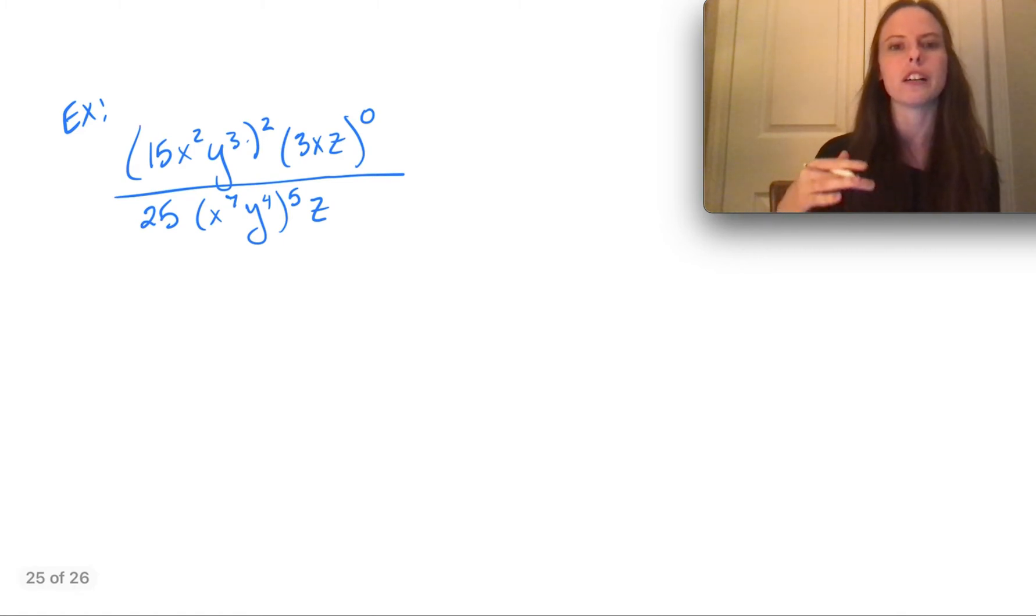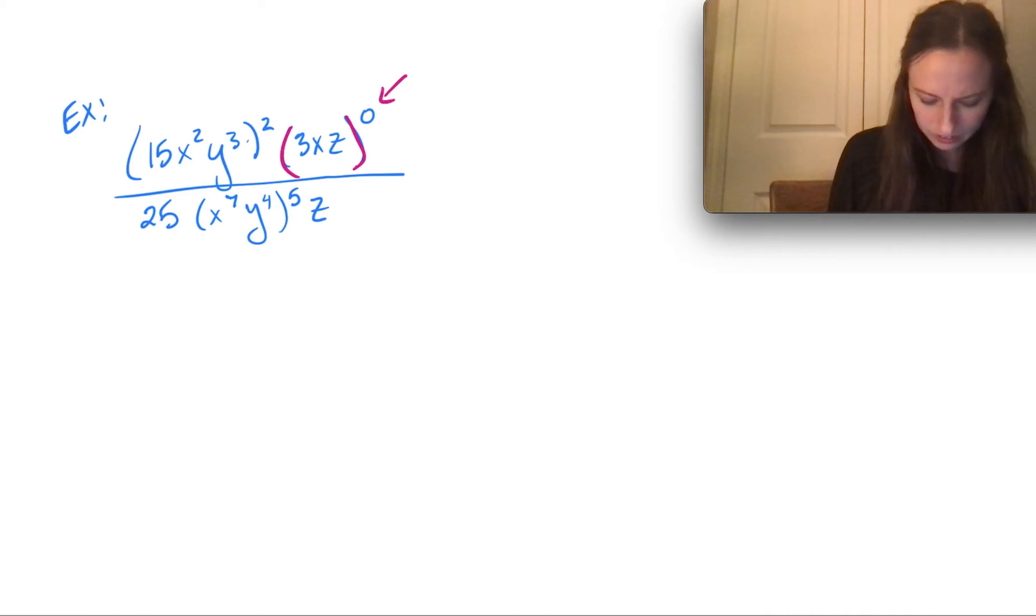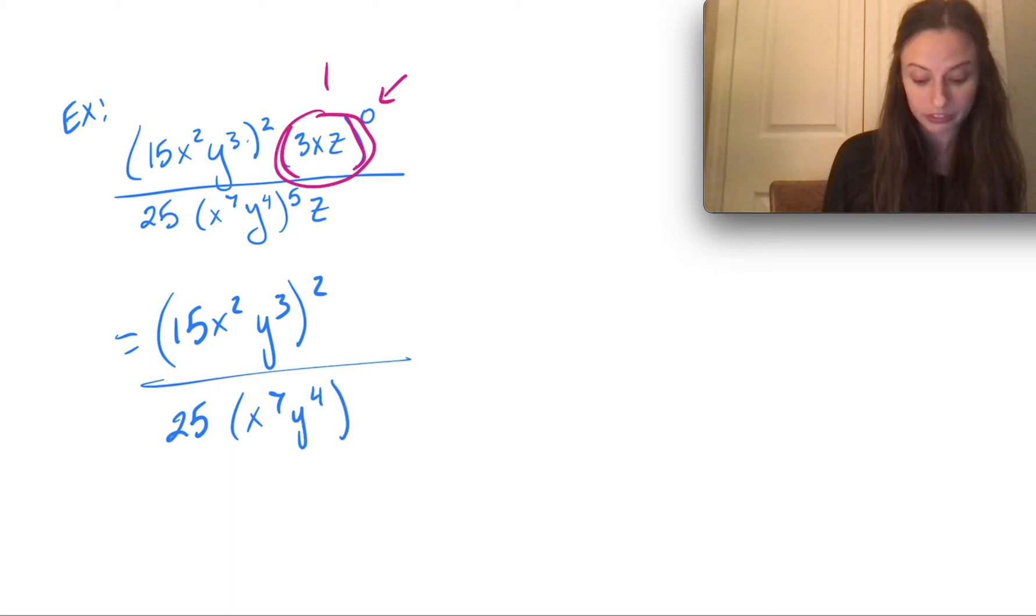So here's an example of that concept as well as all the different exponent rules combined now. So we can see right away, there's our exponent 0. So we've got this whole group of parentheses, but because it's all in parentheses, all of this raised to the 0 just means it's all a 1. So really, we can kind of just get rid of all of that, because it's just a 1, and focus more on the rest of the problem. So let's see, we've got 15x squared y cubed, and all of that is squared, and then that's all over 25x to the 7th, y to the 4th, all of that is to the 5th, times a z. There's a lot going on here, but we got this.